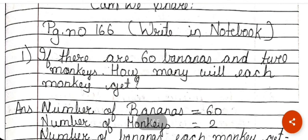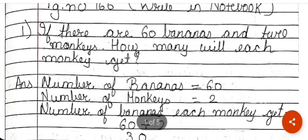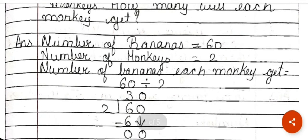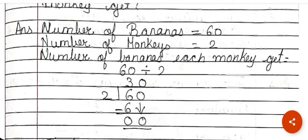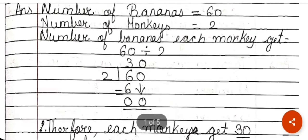The first problem is: if there are 60 bananas and 2 monkeys, how many will each monkey get? First of all, you have to write the total number of bananas, which is 60, and the total number of monkeys, which is 2. We have to find how many bananas each monkey gets, so we divide: 60 divided by 2.